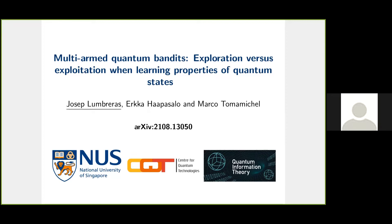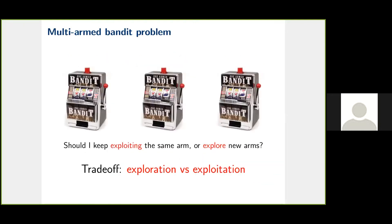Let me start with the classical setting. In this example, suppose that we are in a casino and we have slot machines. What we want to do is play the slot machine that in expectation gives us the highest reward. In order to do that, we should explore all the slot machines, since they follow slightly different probability distributions, while also exploiting those machines that apparently are giving us high rewards.